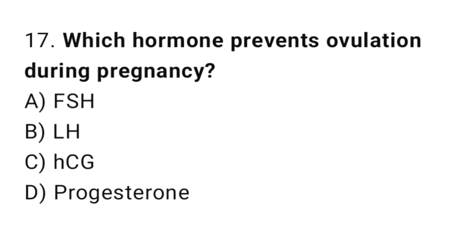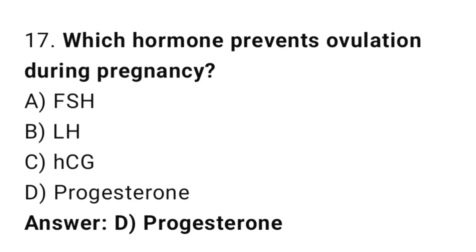Question 17: Which hormone prevents ovulation during pregnancy? The right answer is D, progesterone. High progesterone levels prevent new ovulation.